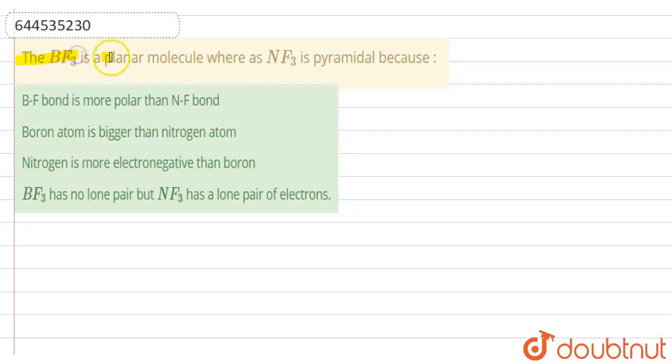Hello everyone. In this question, BF3 is a planar molecule whereas NF3 is a pyramidal molecule. Let's find out what is the correct reason for that.